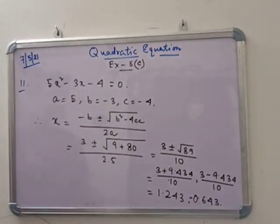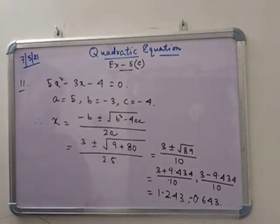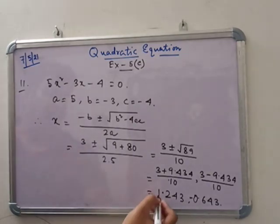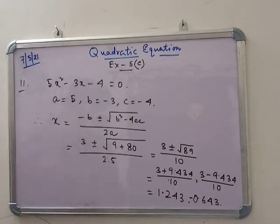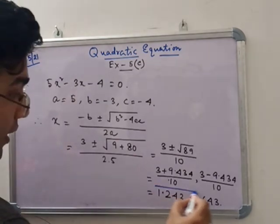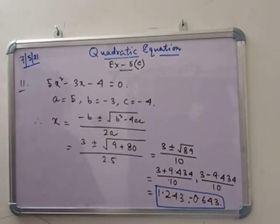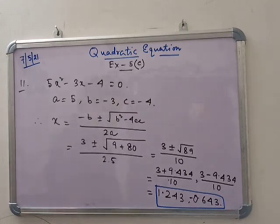3 decimal figures means there are 3 numbers after the decimal point, and 2 decimal figures means 2 numbers after the decimal point. These are the types of problems that normally come for marks in ICSE, so be prepared. The rest of the sums are homework — practice them at home properly. If you have any doubt, you can ask me. Thank you, take care, bye bye.